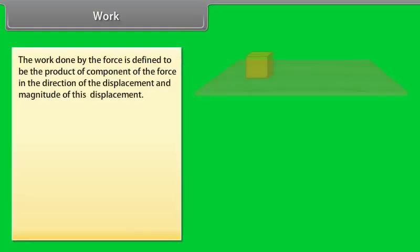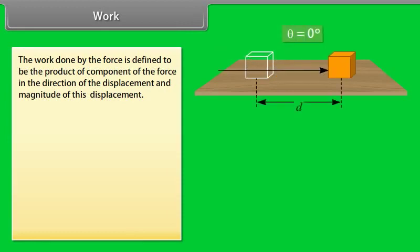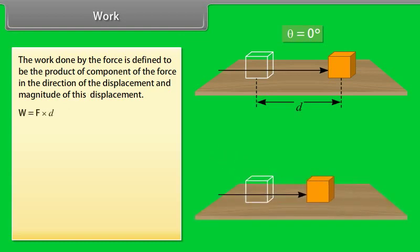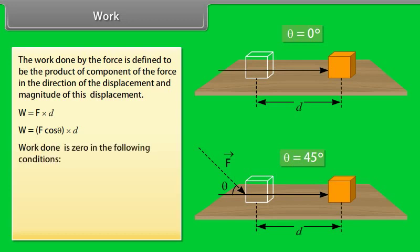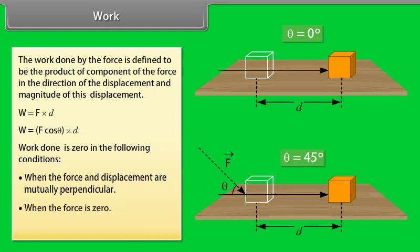Work. The work done by the force is defined to be the product of component of the force in the direction of the displacement and magnitude of this displacement. W equals F into D, W equals F cos theta into D. Work done is zero in the following conditions: when the force and displacement are mutually perpendicular, when the force is zero, when the displacement is zero.